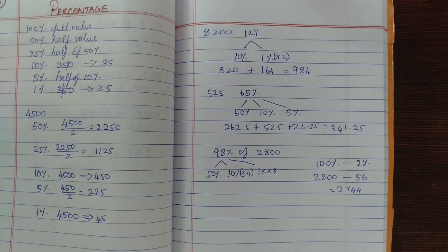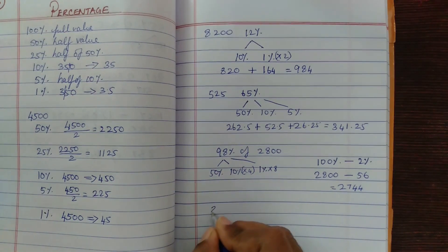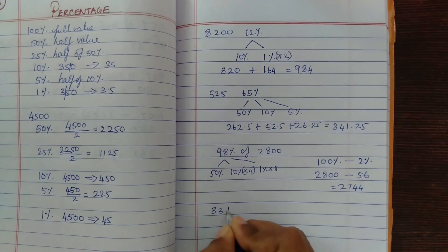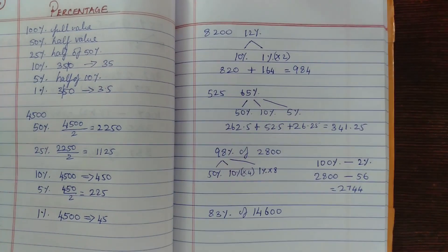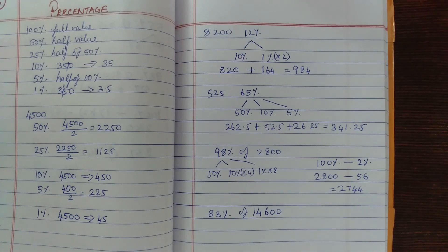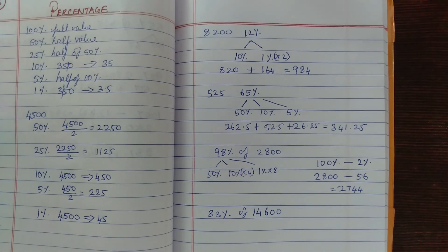Now try this one: find 83 percentage of 14,600 and post your answers in the comment box. I know this is an amazing trick, so quickly share it with your friends and give me a thumbs up right away. That's all for now — until I come up with the next trick, keep waiting and bye-bye!